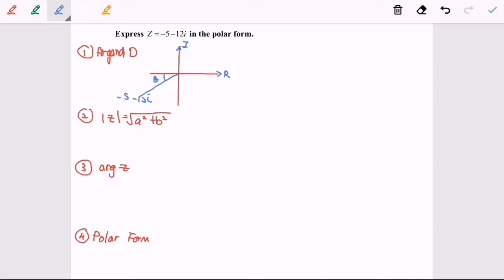Second step is to find the modulus. So modulus of Z will be equal to the square root of 25 plus 144. So modulus of Z will be equal to 13.